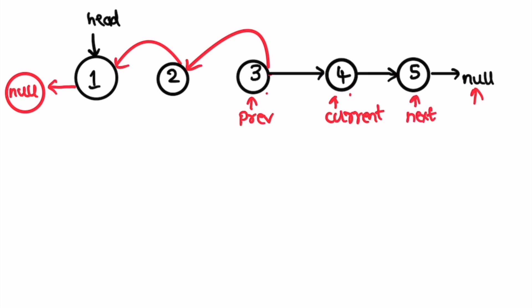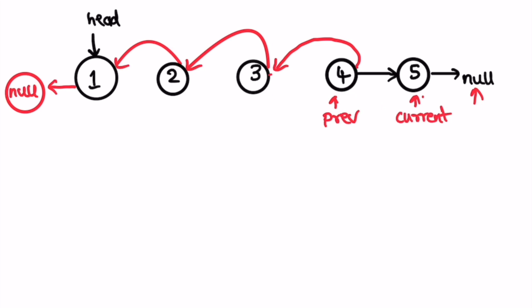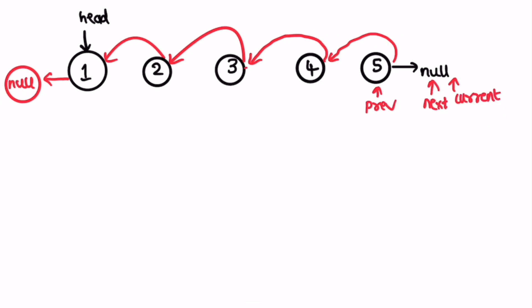In the fourth iteration, current.next points to previous, the connection is removed, and we move the three pointers: previous to current, current to next. Next is not null so it moves to the next pointer. In the fifth iteration, current.next points to previous, the connection is removed. We move previous to current and current to next. Next is equal to null this time, so it remains the same — we don't change anything.